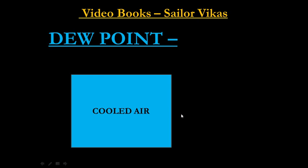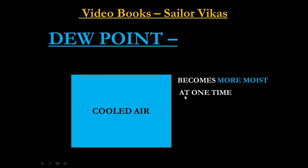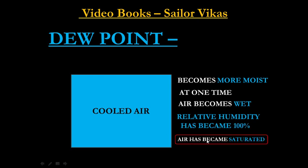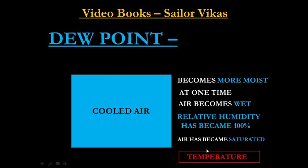The moment it becomes cold air, the air becomes more moist. At one point, the air becomes completely moist — completely wet. This situation, when the air becomes completely wet, means the relative humidity has reached 100%, which is what happens during rain. We call this air saturated, and the temperature at which the air becomes saturated is nothing but the dew point.